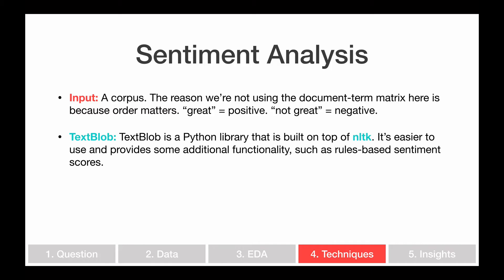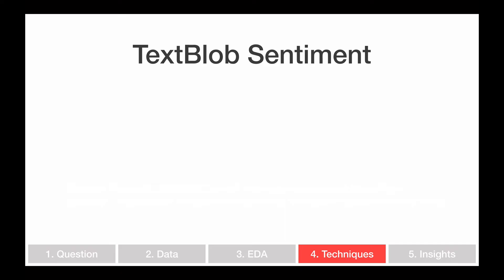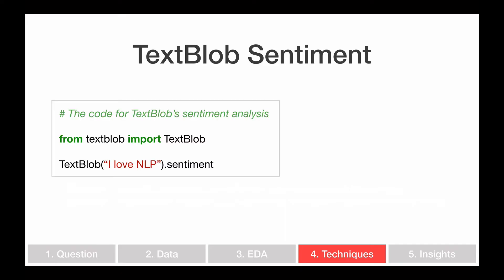TextBlob is a Python library built on top of NLTK. It's a lot easier to use than NLTK and provides additional functionality such as sentiment analysis. The output will be a sentiment score for every comedian — in this case we have transcripts for a bunch of comedy routines. For every comedy routine we'll get a polarity score showing how positive or negative that comedian is, and also a subjectivity score showing how opinionated that comedian is.